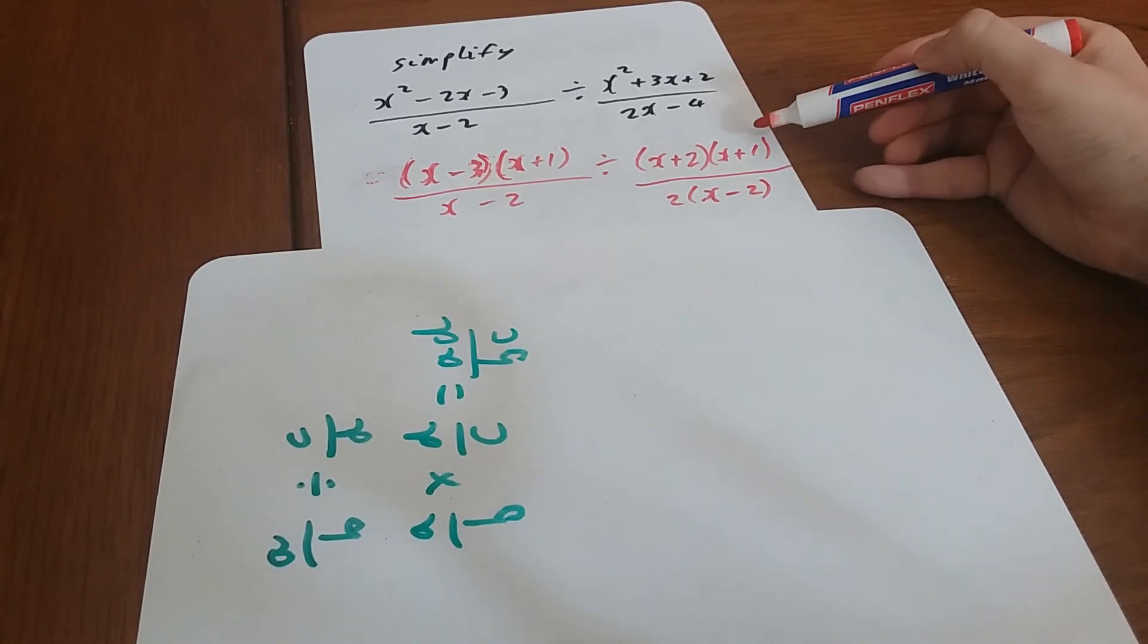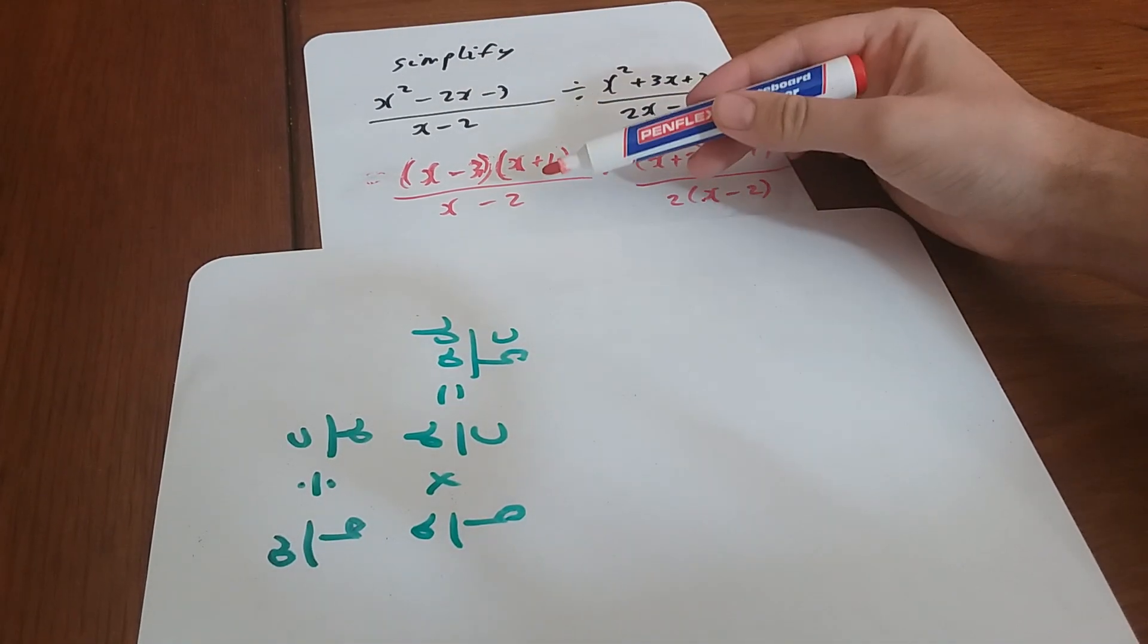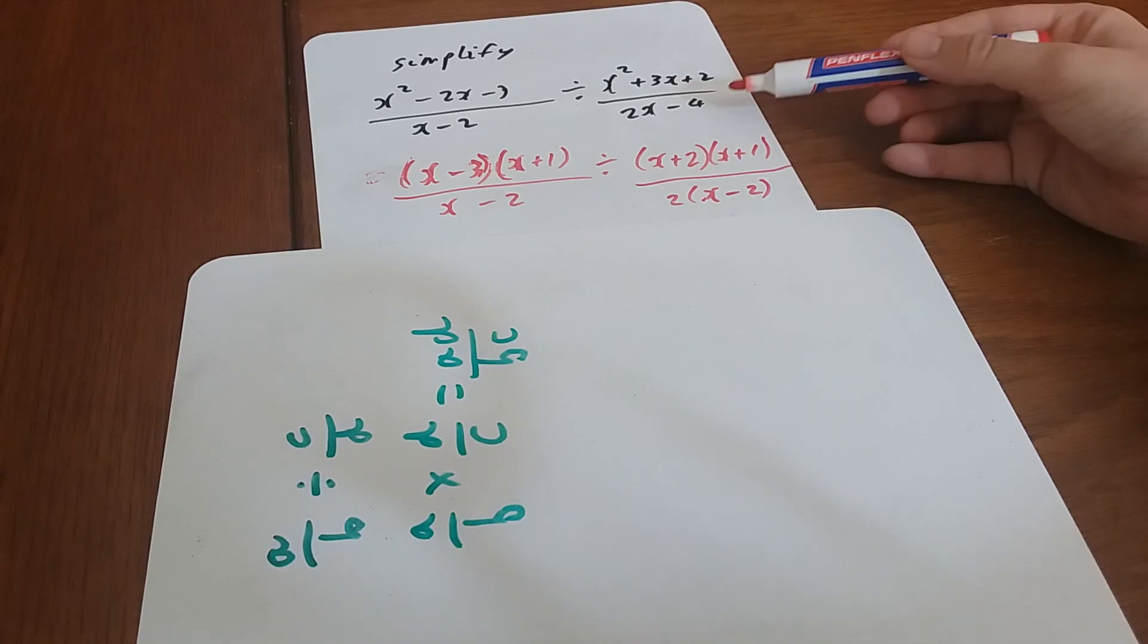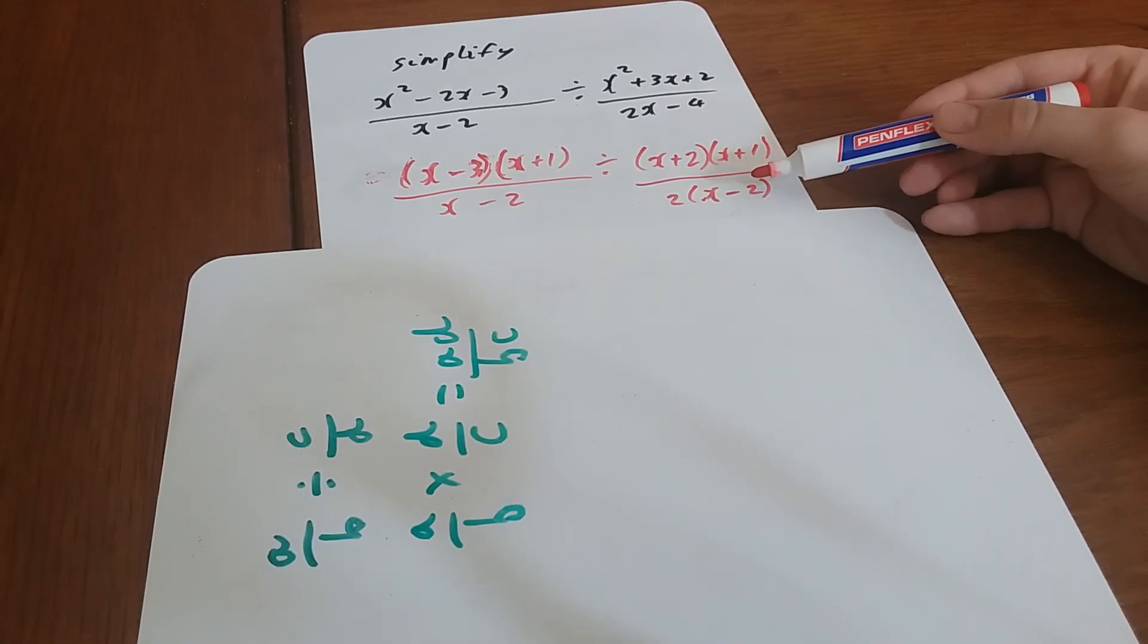And then this thing over here factorizes to this. On the bottom we still get an x minus 2, and on this one you could leave it as 2x minus 4, but I'm going to factor out a 2 in this case as well, just so everything's factorized.